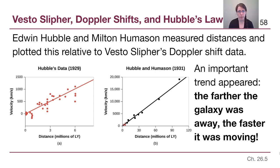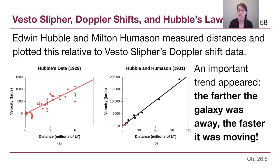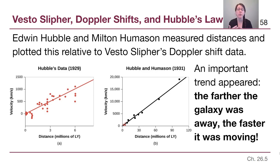Edwin Hubble followed up on this and brought Milton Humason on board to measure the distances and connect that information with Slipher's Doppler shift data. Hubble and Humason measured distances using Cepheid variables and other methods. Once these two pieces of information — speed from Doppler shift and distance from Cepheid variables or other methods — were brought together, they found a very important trend: the farther a galaxy was from us, the faster it was moving away from us.